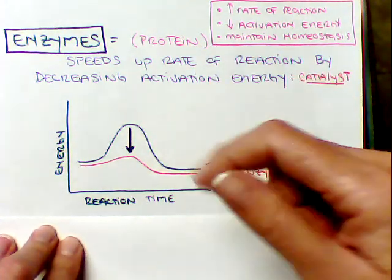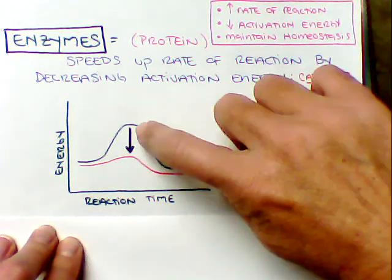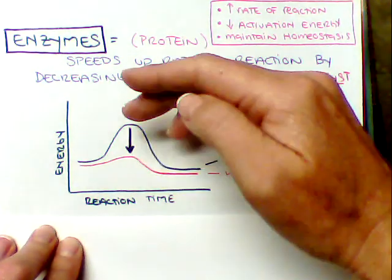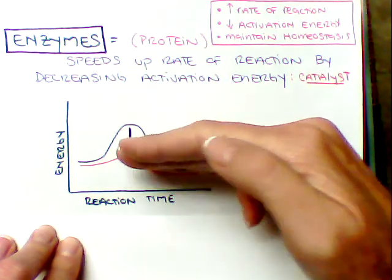So just remember, enzymes are a protein. We increase the speed of reaction by decreasing our activation energy. So instead of taking this much energy, we now have this much.